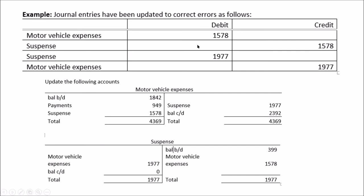Here you can see two different errors going in opposite directions. You've got to update the motor vehicle expense and the suspense account — that could be a question where you reverse it out. The correction journals are posted into T accounts, and you can see how it comes back to zero at the end because the errors were entered, a suspense account was created, then you update the accounts. Notice that in the details column, you record the other account the entry goes to — so in the motor expense it would reference the suspense account, and vice versa — so you can track back where the other side of the journal was posted.